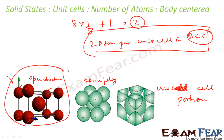So in the normal cubic packing, we saw eight atoms in the corners each contributing one-eighth, giving a total contribution of only one atom per unit cell. In the body-centered case, there is also one atom in the center of the body which is not shared by anyone. Total is eight into one-eighth plus one equals two atoms per unit cell.